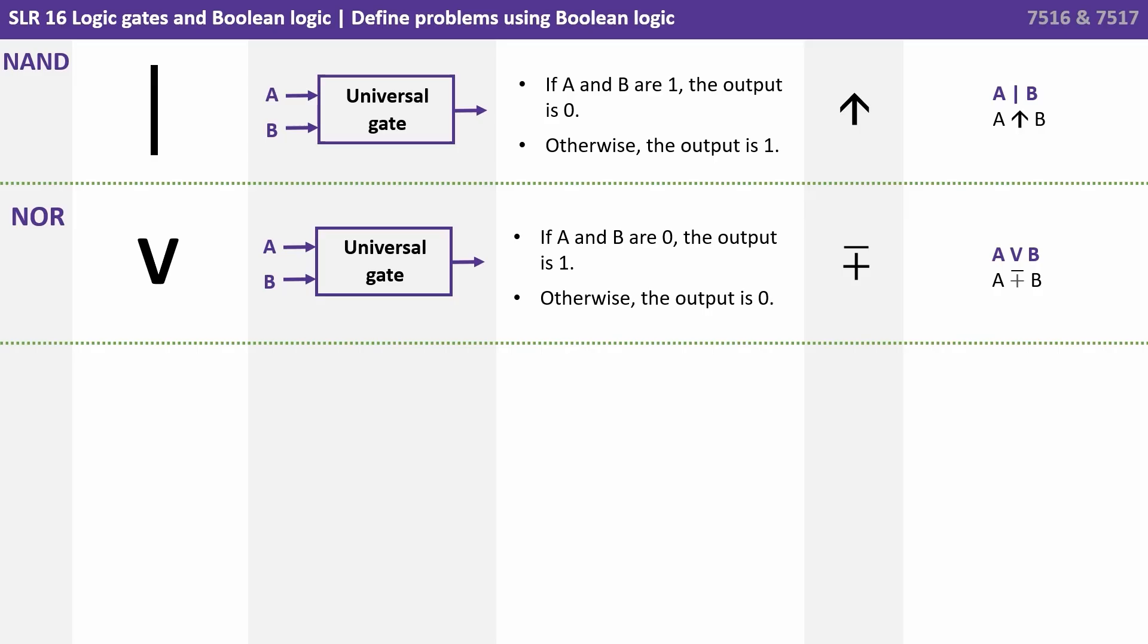We then have NOR, which is NOT OR. So again, this is the opposite of an OR gate. If A and B are 0, the output is 1. In all other situations, the output is 0. And this is represented by a V symbol.